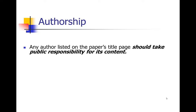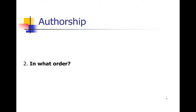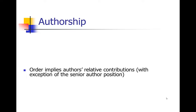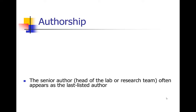It's a high bar, and sometimes authors get thrown on for bad reasons — we want to keep it to people who really can take public responsibility for the content. The second question is author order, which implies relative contributions. The first author is usually the person who actually wrote up the draft — often a graduate student or junior person who collected all the data. One exception is that the last position is often a senior author — a position of stature. The head of the lab or research team often will be the last listed author.